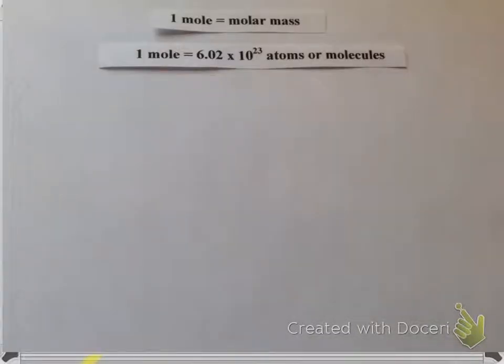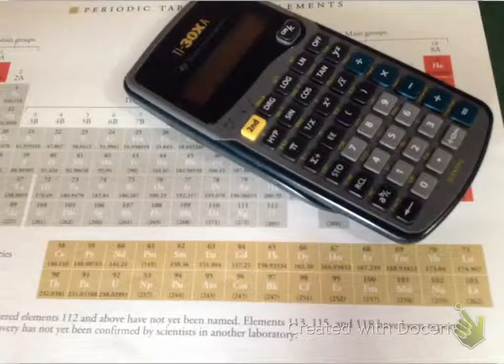The two conversion factors we're going to use today are that 1 mole equals the molar mass, which we covered in Unit 4, and that 1 mole equals 6.02 times 10 to the 23rd atoms or molecules, which we learned back in Unit 2. So you're going to need your periodic table and a calculator. Pause the video while you get those materials.